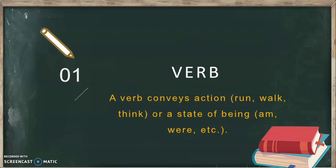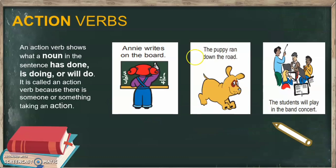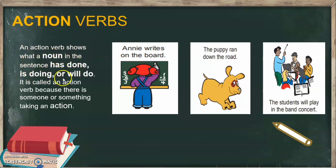We are going to learn about helping verbs, or what we call auxiliary verbs — we'll talk about that later. So, action verbs: an action verb shows what a noun in a sentence has done, is doing, or will do.